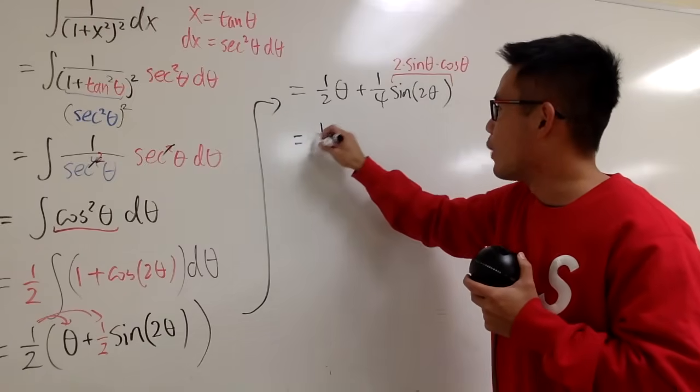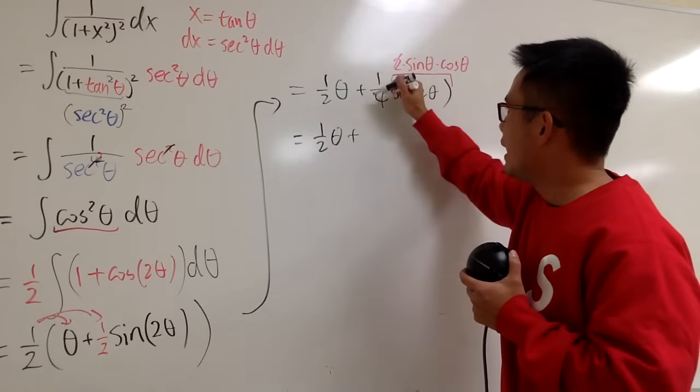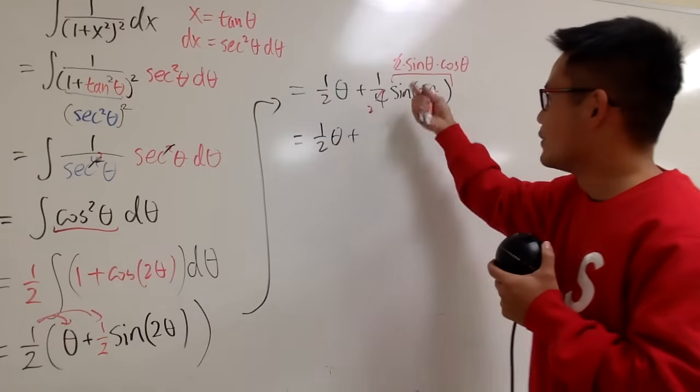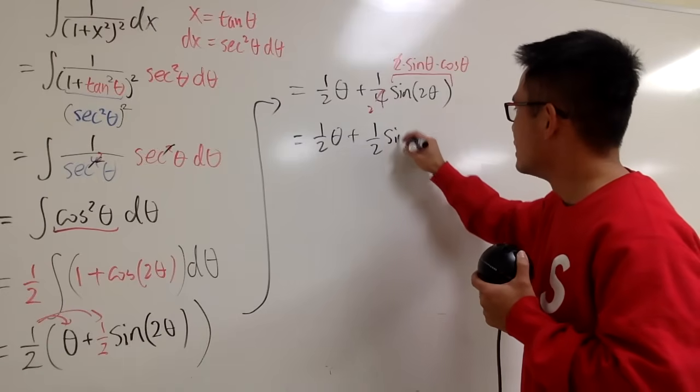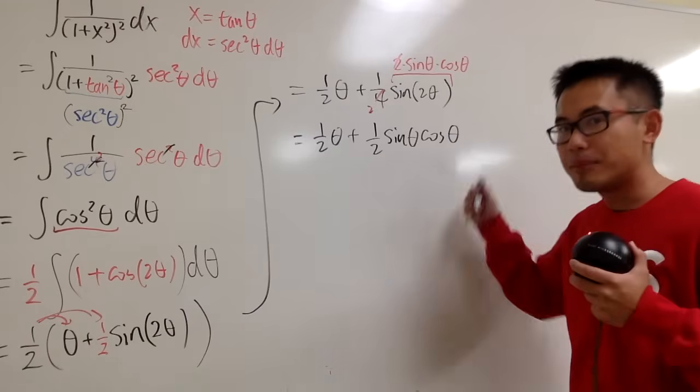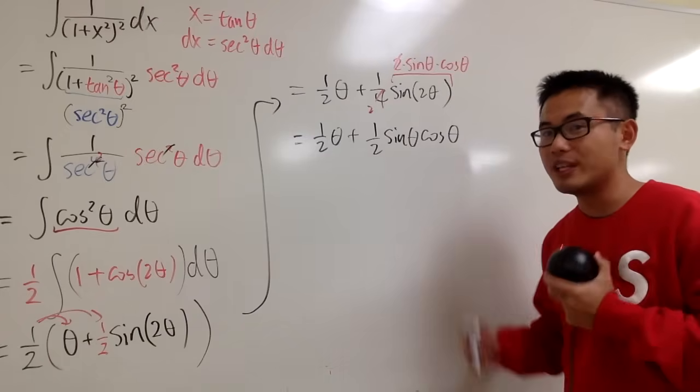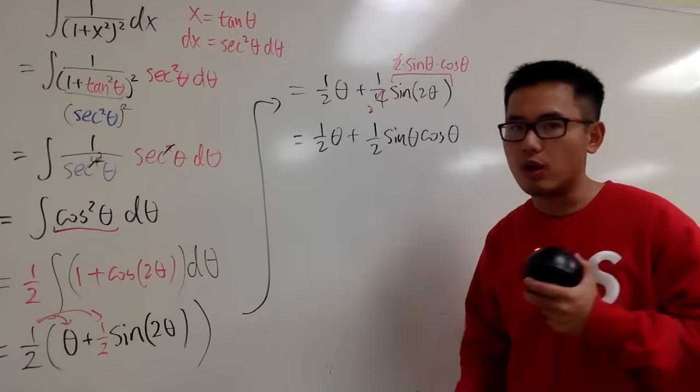And now you see, this is 1 half theta plus 2 and 1 over 4. You can reduce. So you have 1 half, and now this is sine theta, cosine theta. I'm not putting down plus C yet, because we are not legitimately done yet. We are going to figure out how we can go back to the x world.